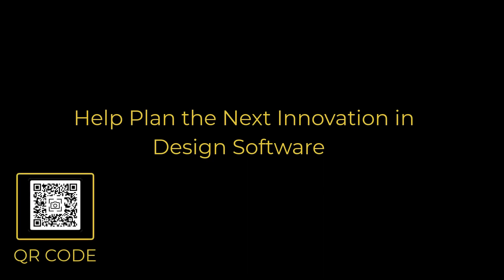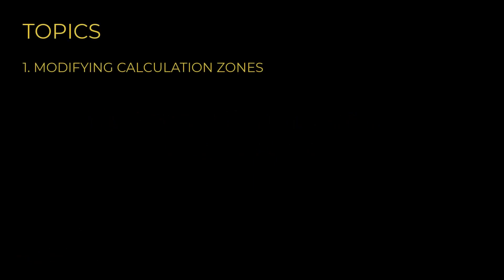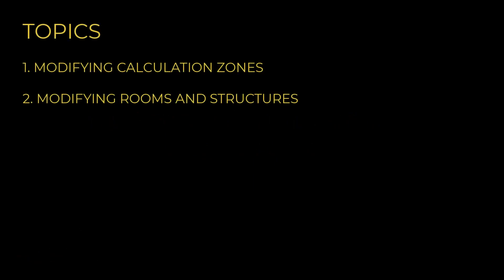Before we begin the video, we would like your help in planning the future of Visual by taking a short survey to share your requirements and expectations of the software so that we can develop the next innovation in design software. Scan the QR code or use the link in the description below. In today's video, we will look at how to modify the size and shape of rooms, structures, and calculation zones in the Visual lighting software.